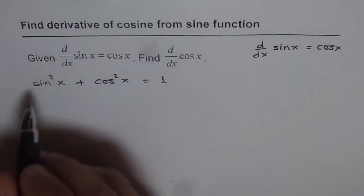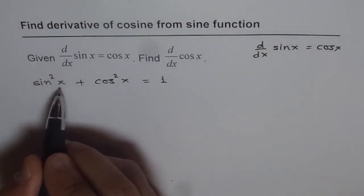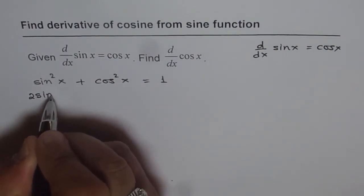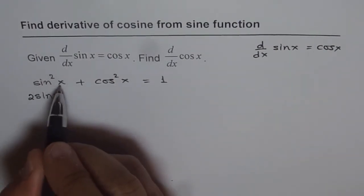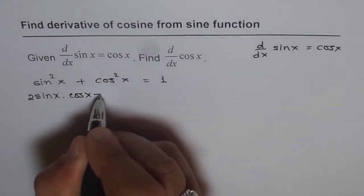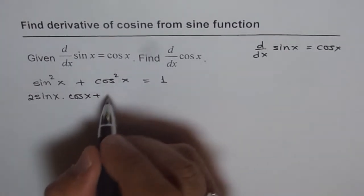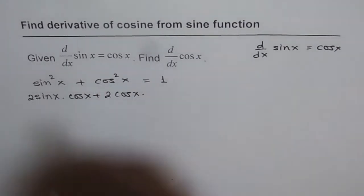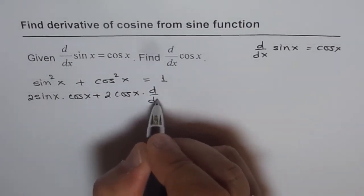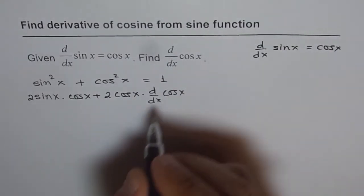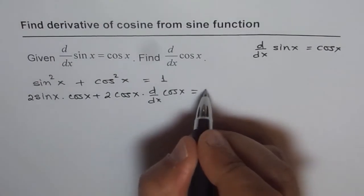Then what do we get? When we differentiate this with respect to x, we get 2 sin x times derivative of sine x, which is cosine x, plus derivative of cos x will be 2 cos x times derivative of cos x, that is d/dx of cos x. This is what we need to find. And derivative of constant is 0.